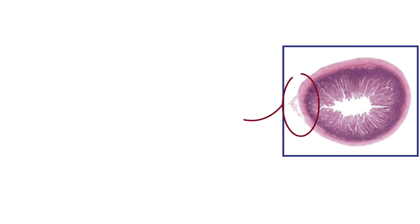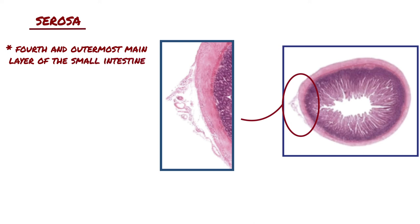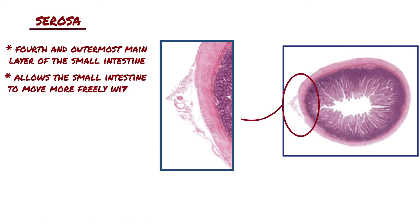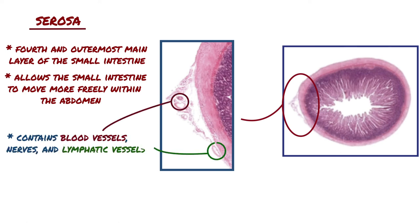Looking at the same image, we can see a portion of the serosa, which is the fourth and outermost main layer of the small intestine. The serosa is a thin layer of loose connective tissue that allows the small intestine to move more freely within the abdomen, and it contains blood vessels, nerves, and lymphatic vessels as well.